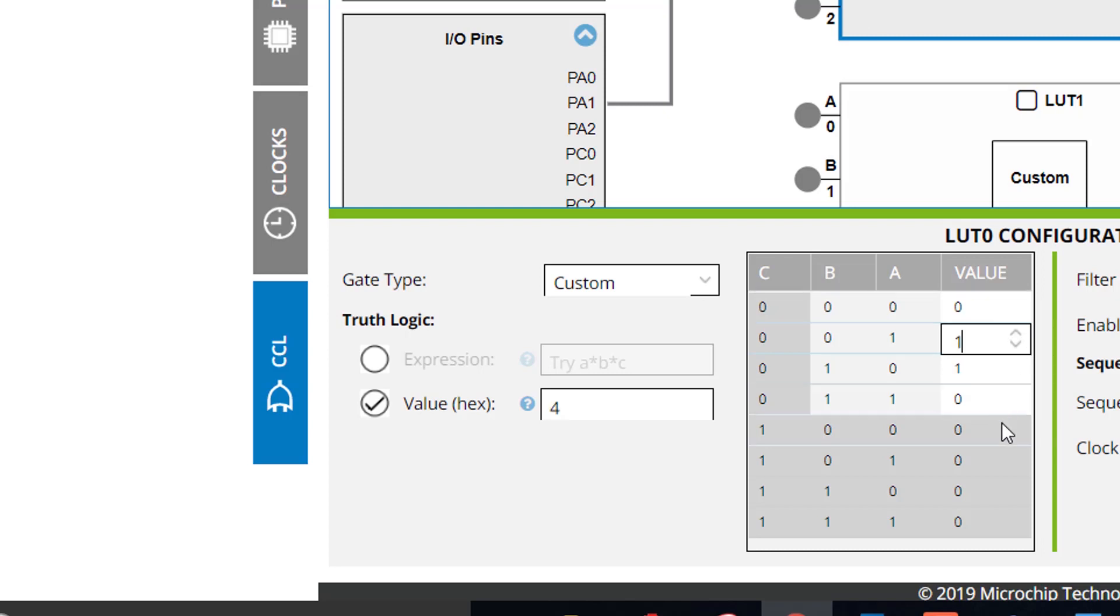As you can see, when I modify the output values of my truth table, the hex value changes as well. Again, my configurable custom logic peripheral will now behave based on my truth table.